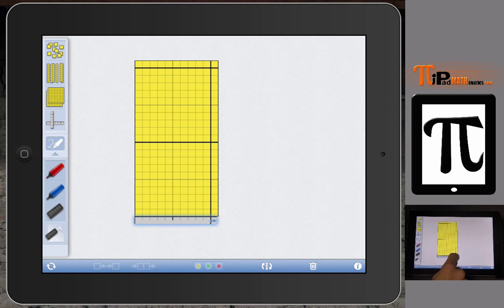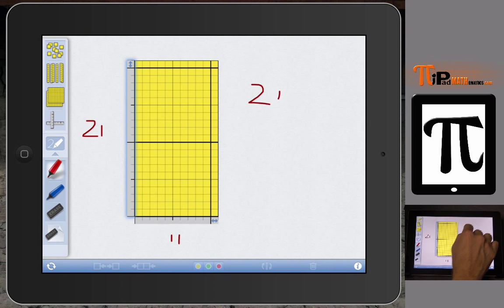So now what we have is, we have 11 along one dimension, and now we have 10, 21 along the other dimension. Come on. There it is. So we have 21 over here, and we have 11 over there. So we have 21 times 11.